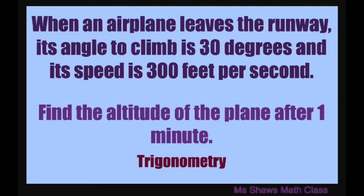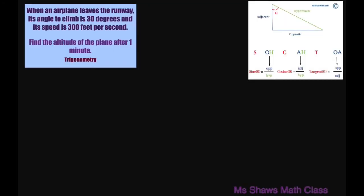Hi everyone. When an airplane leaves the runway, its angle to climb is 30 degrees and its speed is 300 feet per second. We're going to find the altitude of the plane after one minute, so let's draw a picture.